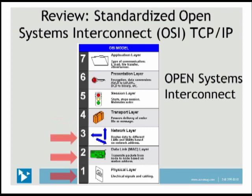The network layer is where you may be bridging between different local area networks or wide area networks. The transport layer ensures the delivery of an entire file or message. The session layer stops and starts different processes and applications. The presentation layer makes sure that data coming out of the transmission protocol is in the format that the application layer can use. And then the application layer, which could be a mail server, a digital signal processing application, or whatever you might need.